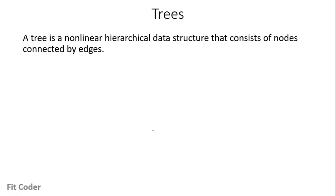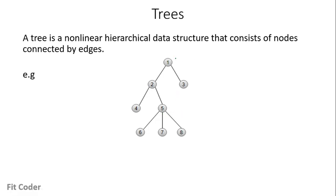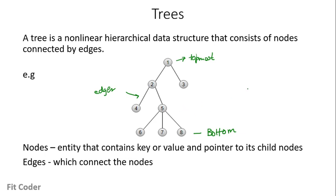A Tree is a Non-Linear Hierarchical Data Structure that consists of Nodes connected by Edges. As you see here, we have a hierarchy — this is the topmost node and these are the bottommost nodes. The nodes here are 1, 2, 3, 4, 5, 6, 7 and 8, all connected by Edges. The data types of the nodes can be anything, but in a tree all nodes should have the same data type. Nodes are entities that contain a key or value and a pointer to their child nodes. Trees are quite similar to graphs, but one major difference is that trees cannot contain a cycle whereas graphs can.